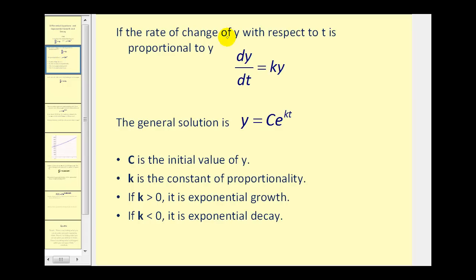If the rate of change of y with respect to t is proportional to y, then the general solution to this differential equation will be y equals C times e to the power of kt.